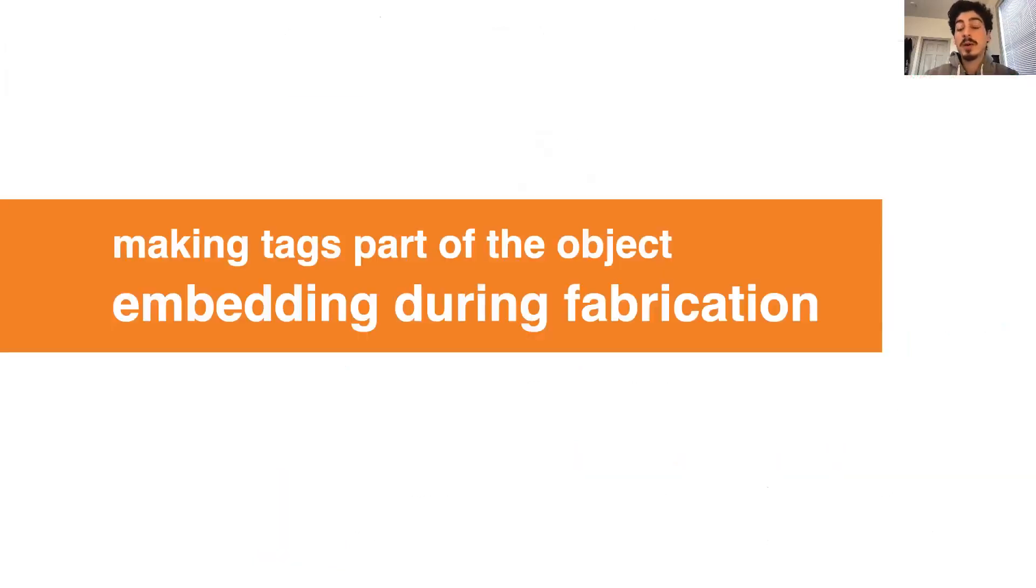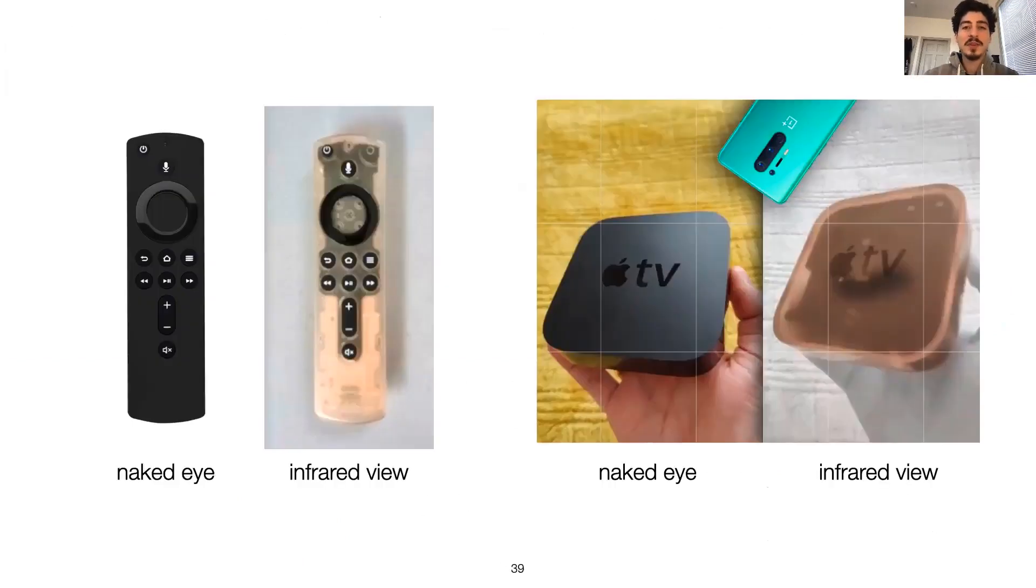So now that we know more about near-infrared, I'd like to talk about how to embed infrared-based tags into 3D objects during the fabrication process. One key observation here is that many plastic materials actually pass near-infrared light. Such materials are commonly used in TV remotes and other electronics.